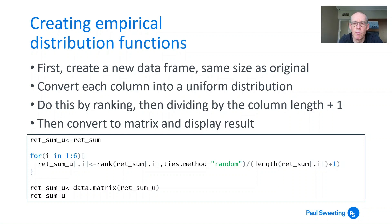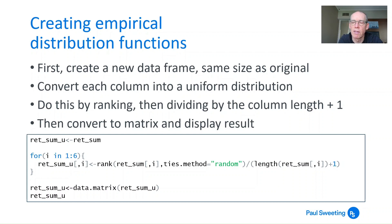I want to put the rank of the original data frame RETSUM, ith column, into each column of RETSUMU. You can specify a ties method — if you've got two values which are exactly the same, how do you deal with that? The method I've chosen is random, so it'll randomly decide which comes first. I then take those ranks and divide by the length of RETSUM blank comma i — the length of that column, which is the number of items in that column. So I'm essentially taking the rank and dividing it by n plus 1.